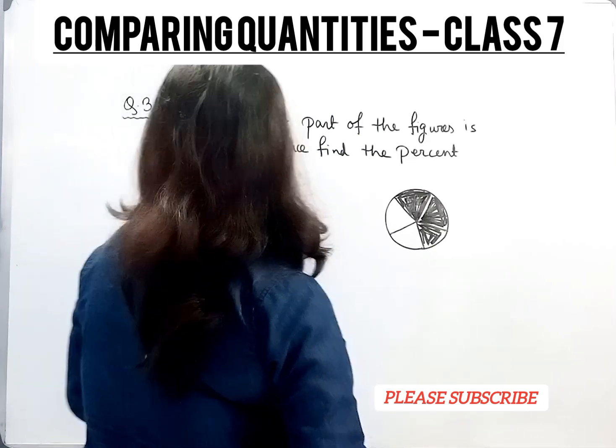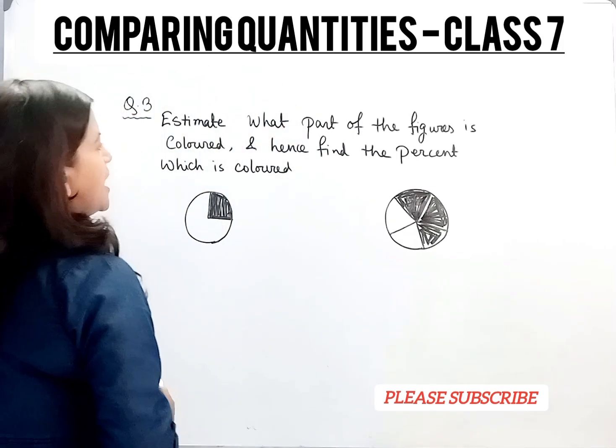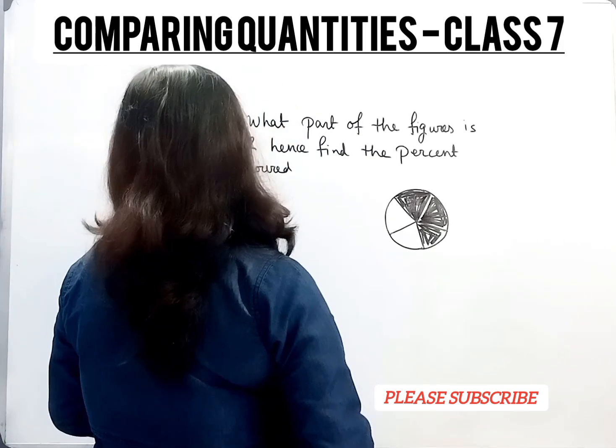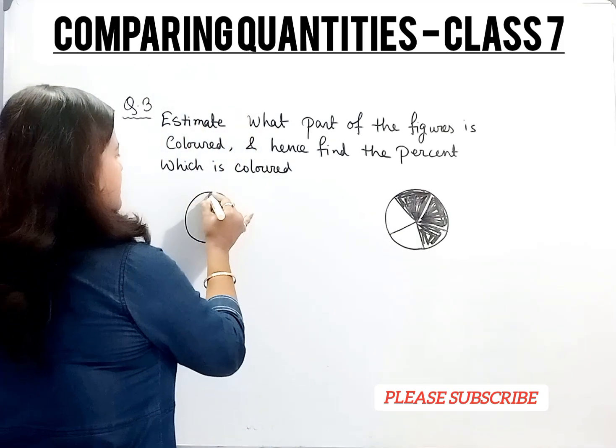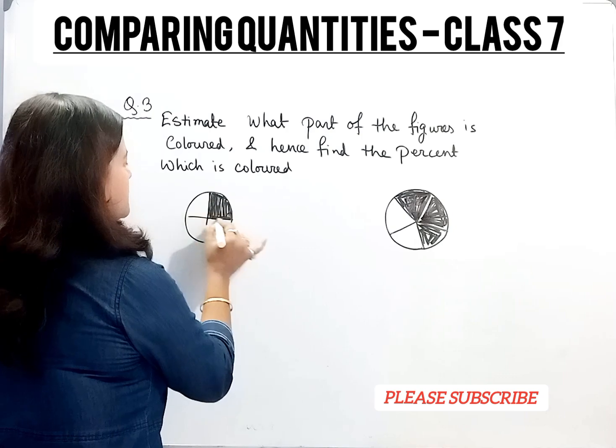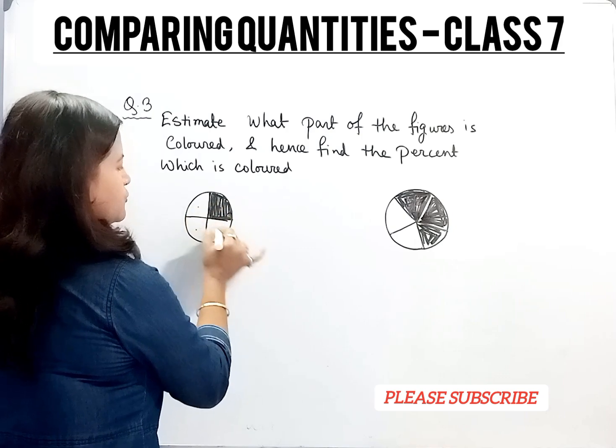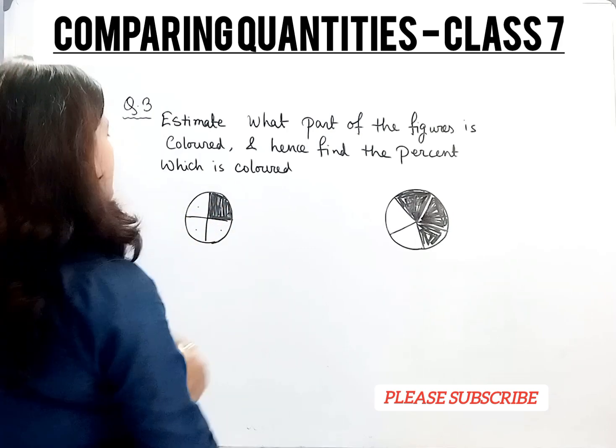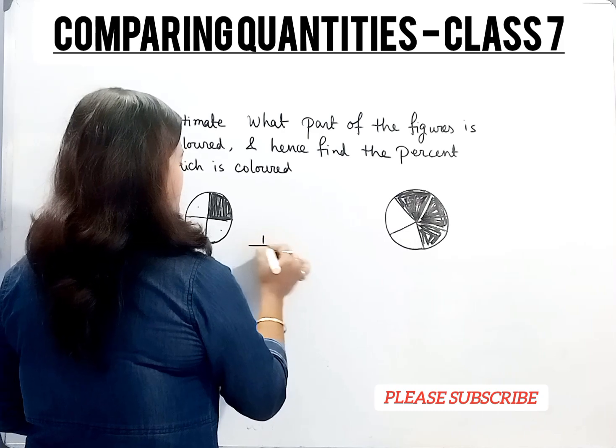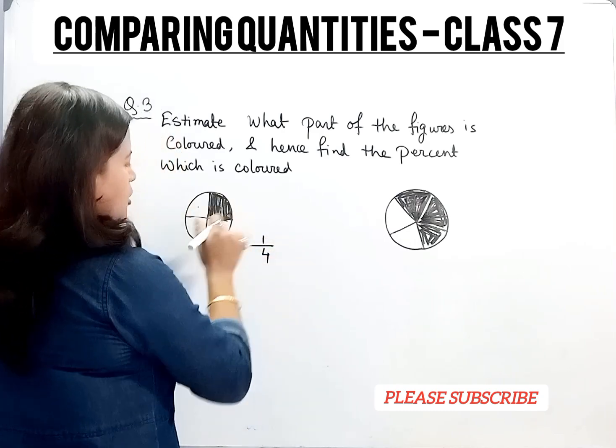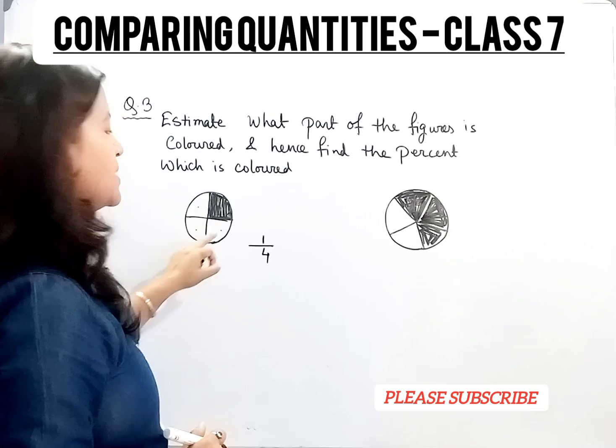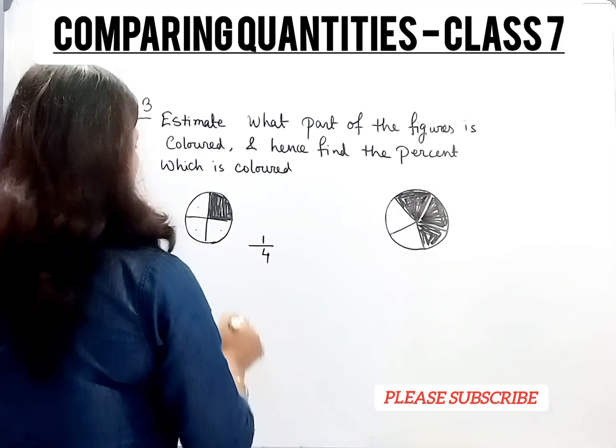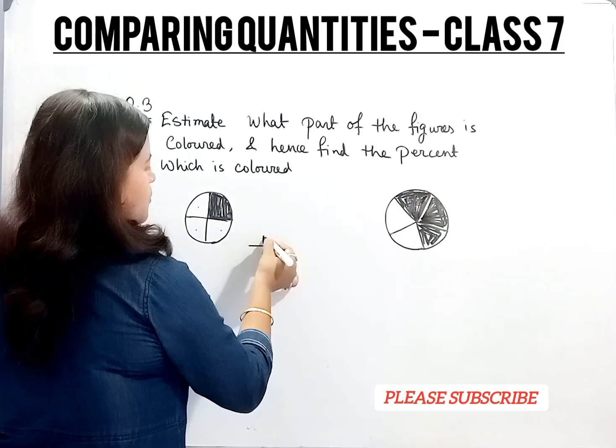Estimate what part of the figures is colored and hence find the percent which is colored. Now there is a circle. This circle is divided into 4 equal parts: 1, 2, 3, 4. So in fraction we can write it as 1 by 4 because among 4 parts, 1 part is shaded and 3 parts are unshaded.